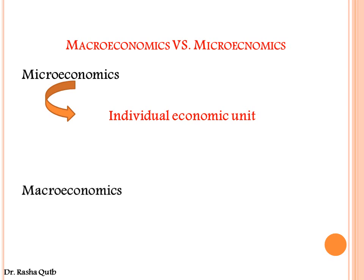Macroeconomics deals with what we call aggregates. It is a branch of economics concerned with the behavior of the whole economy. In this case, we are not dealing with just one unit inside the economy — we are dealing with aggregate variables. Aggregates means total variables. We are not talking about one single good; we are talking about aggregate production, total consumption, and total producers and consumers inside the economy.